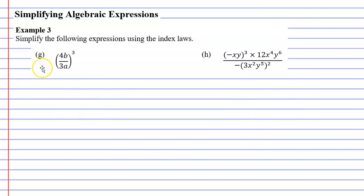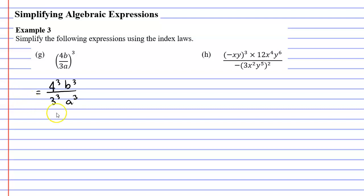Let's move on to question G. We have a fraction inside the brackets and a power on the outside, so everything inside needs to be applied to the power of 3. We're going to have 4 to the power of 3, B to the power of 3 for the numerator, and 3 to the power of 3 and A to the power of 3 for the denominator. This is our simplified expression. I can convert 4 to the power of 3 to 64 and 3 to the power of 3 to 27, giving us 64B cubed over 27A cubed.